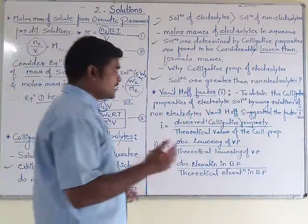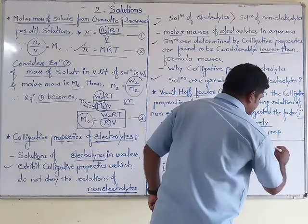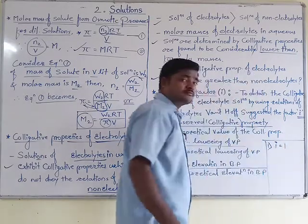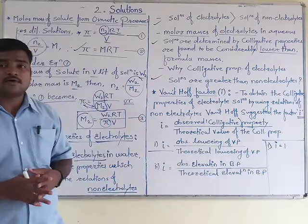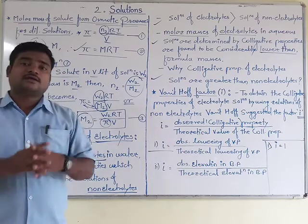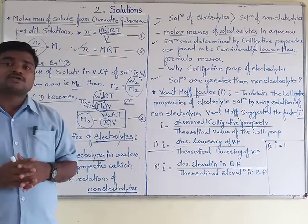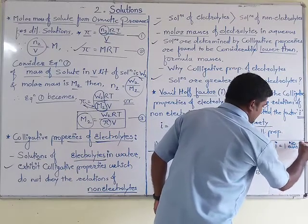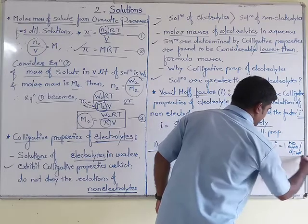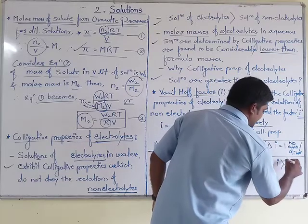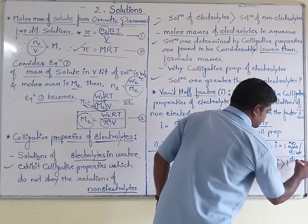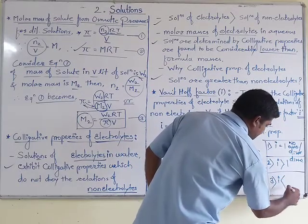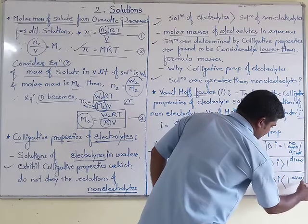When we get the value of i in different forms, there are three cases to keep in mind. If i = 1, then neither association nor dissociation takes place in that electrolyte. If i > 1, then dissociation takes place. If i < 1, then association takes place. These are the three cases you should keep in mind after obtaining the value of the Van't Hoff factor i.